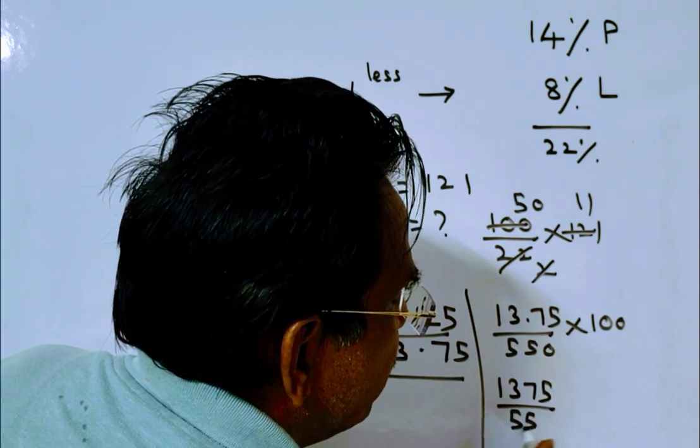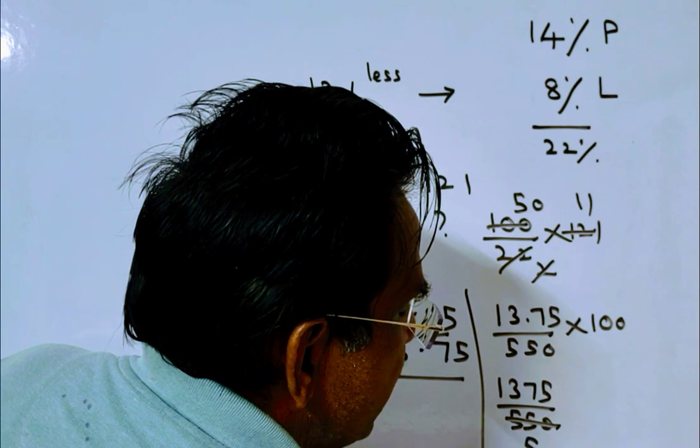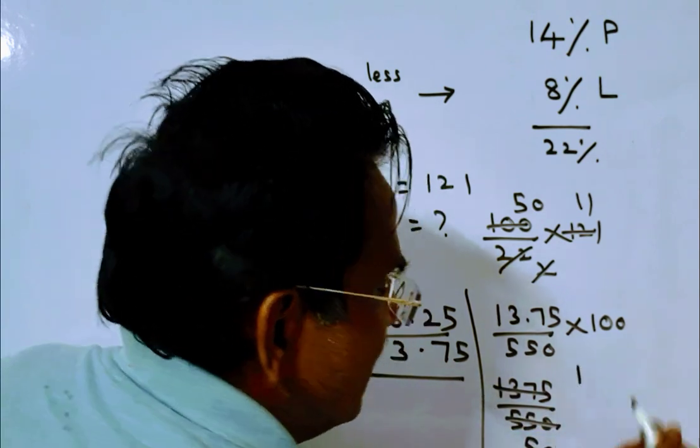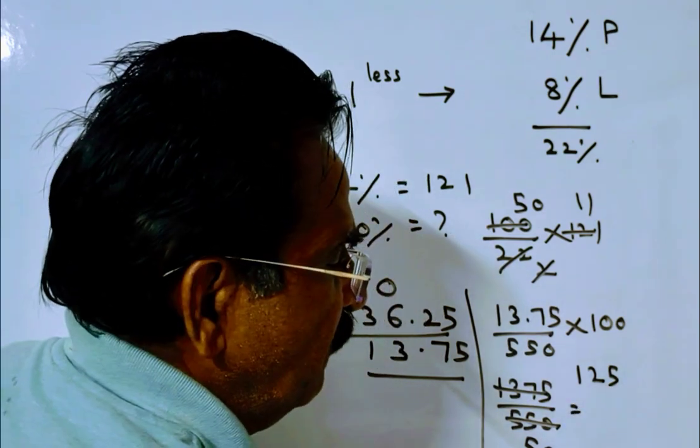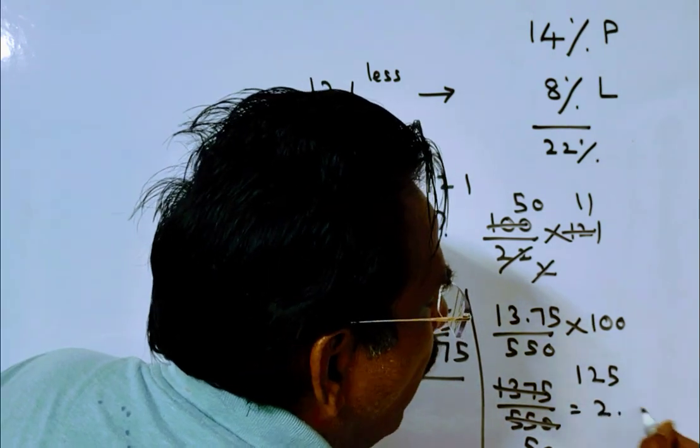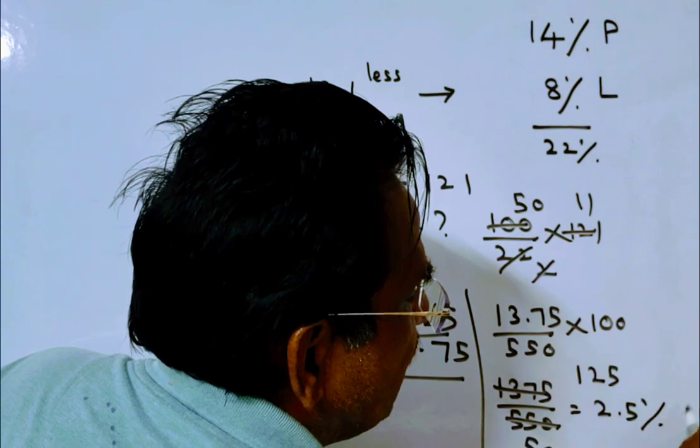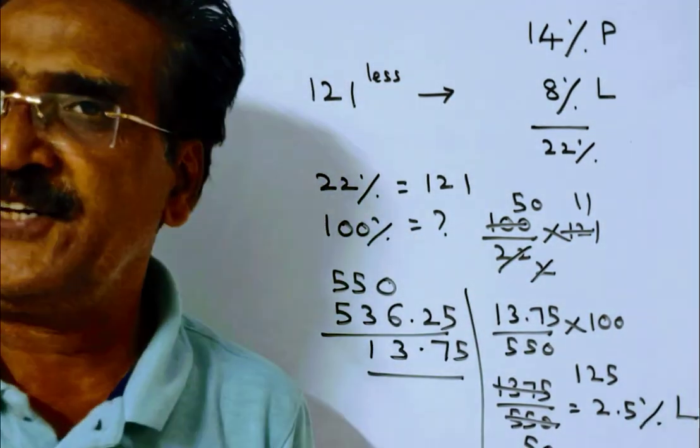1375 by 550—1150s, 1150s, 111s, 11, 112s, 115s, 125 by 50 means 2.5. So 2.5 percent loss. Thank you friends.